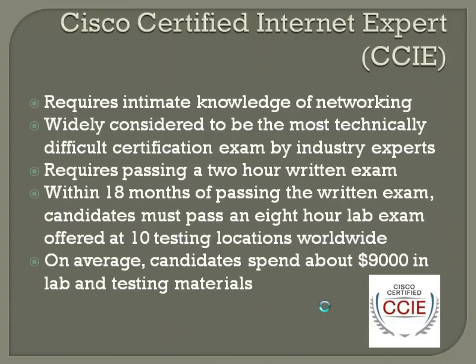It's got a two-prong process. You initially have to pass a two-hour written exam — I believe it is a hundred questions. Once you pass the written exam, within 18 months you have to go and take an eight-hour lab exam that's offered at ten testing locations worldwide, two of which are here in the United States — one in South Carolina and the other in San Jose, California. It is a very expensive process. The test itself costs $1,400, and on average candidates end up spending about $9,000 to $10,000 on lab and testing materials. Very few people pass the lab exam on their first attempt.